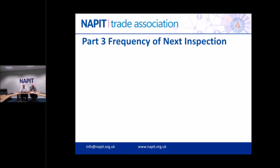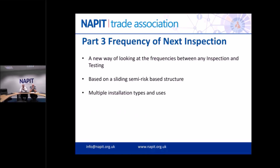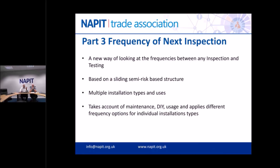Completely new and groundbreaking - we have a frequency of next inspection section that gives advice on how to risk assess your frequency of next inspection. We've also got our version of a table of next frequencies, which we're calling our sliding semi-risk-based structure. We've taken an installation and accounted for maintenance, DIY, usage, and all the different installation types, and given a sliding scale of frequency: low, medium, or high.